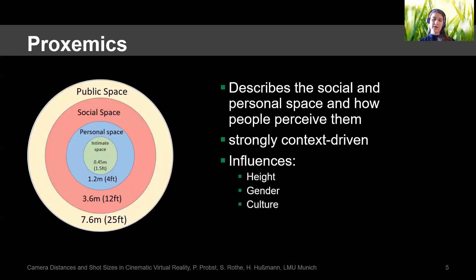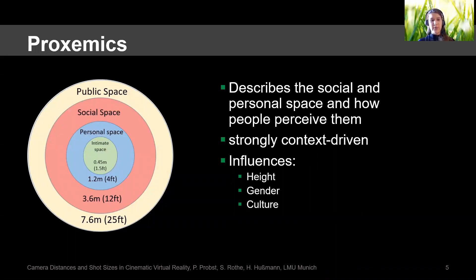Proxemics is a psychological field which describes the social and personal space and how people perceive them. People communicate through their placement in space and through their choice of distance to each other. For example, a friend would always keep a closer distance to you than a stranger, so it is very strongly context-driven. Some influences can be the height, the gender, and the culture of a person.